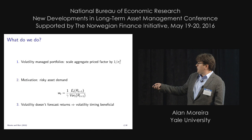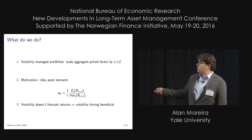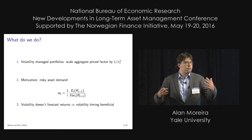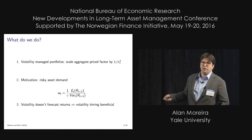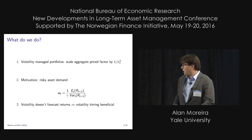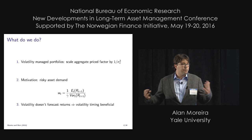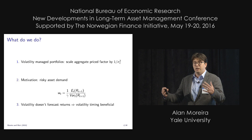If you can basically predict the risk-return tradeoff, then you should invest more in this aggregate portfolio when this risk-return tradeoff is more attractive. As is well known, there's a very weak relationship between expected return and volatility in the time series. So it almost has to be that volatility timing is beneficial. We are just going to apply these ideas to the data, and it turns out to be very much true.